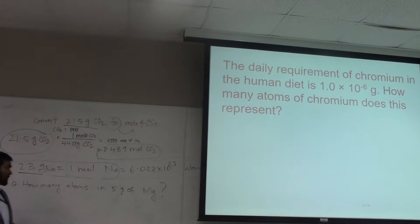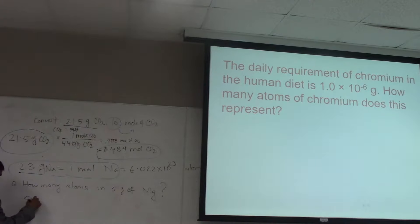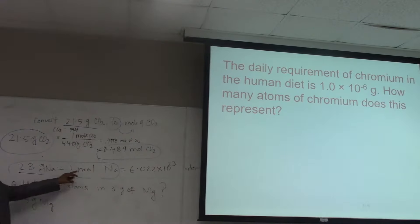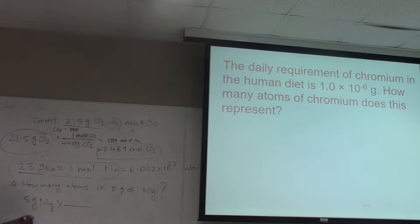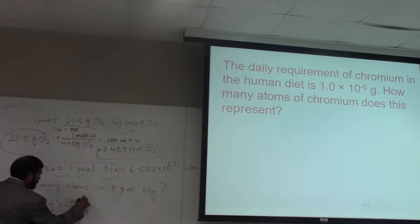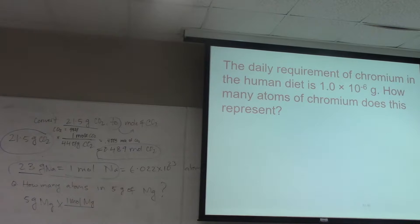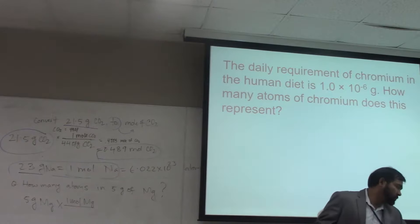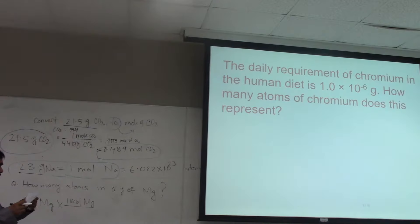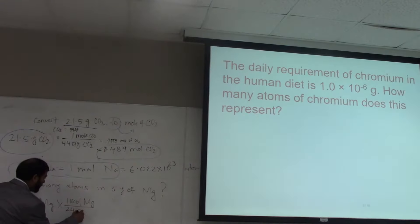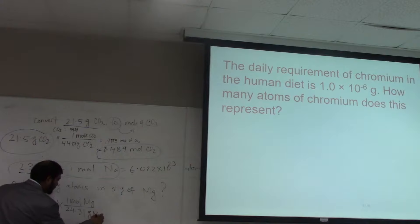You start off with 5 grams, and then you convert gram to mole by multiplying the converting factor: one mole of magnesium over its molar mass. The molar mass of magnesium is 24.31 grams per mole.